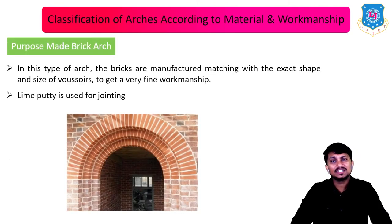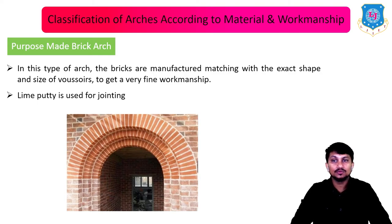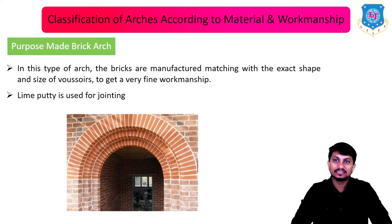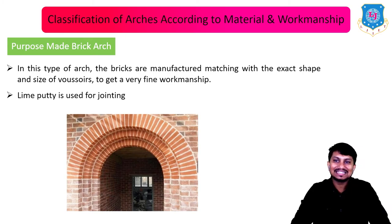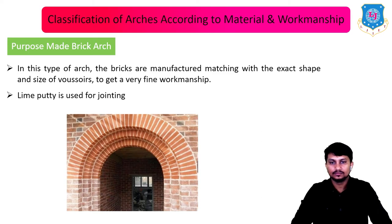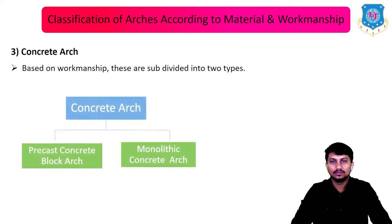Next is the purpose-made brick arch. In this type the bricks are manufactured to match the exact shape and size of voussoirs to achieve very fine workmanship. This type is suitable for exposed brick work. Lime putty is used for jointing, and the bricks are of exact shape and size of voussoirs.